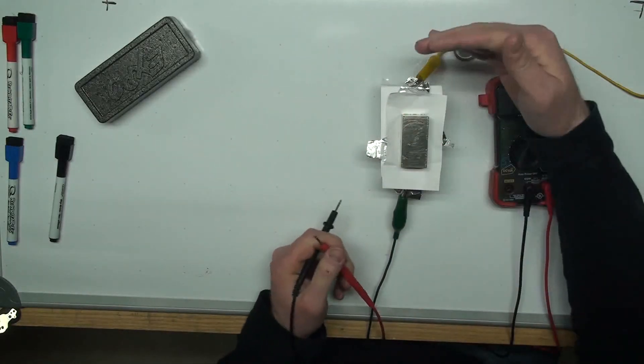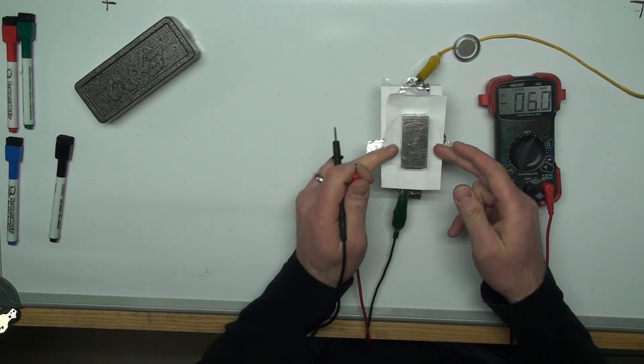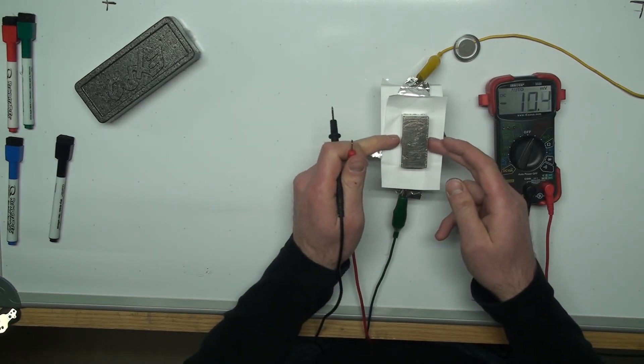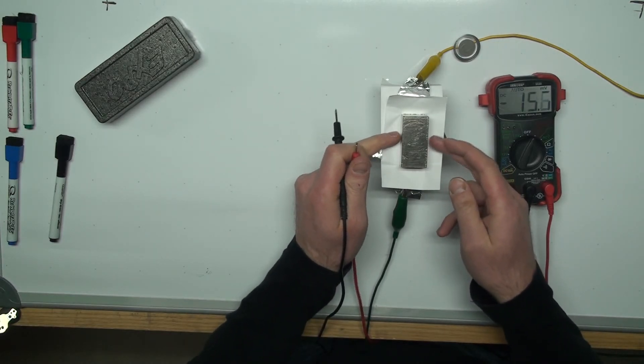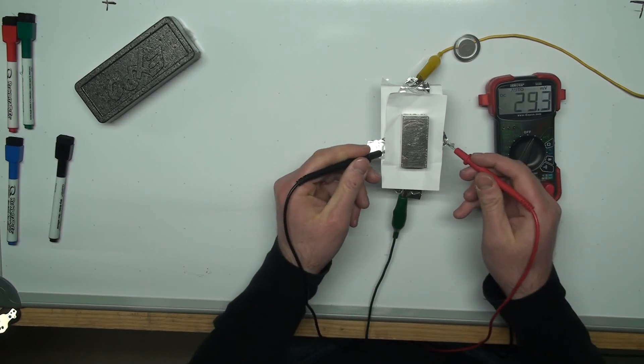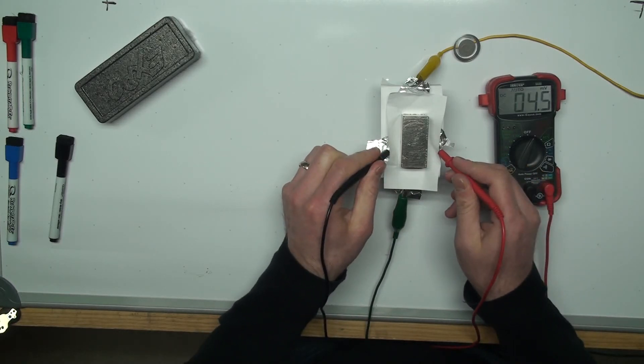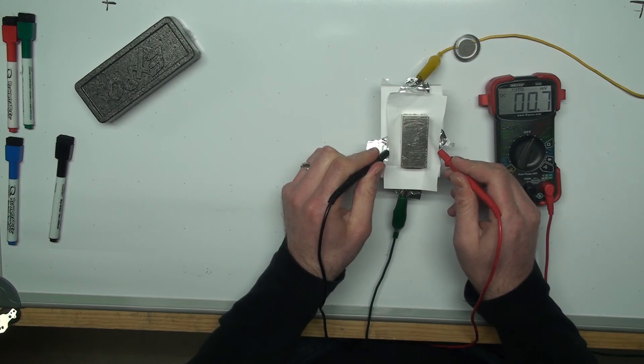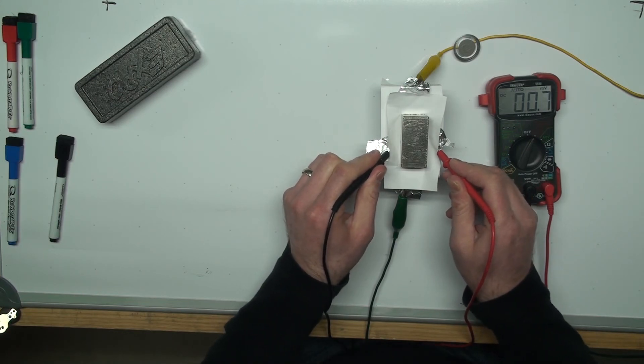Current wise, there should be no potential difference from one side to the other in the conductor. So we still have approximately a little less than a millivolt.